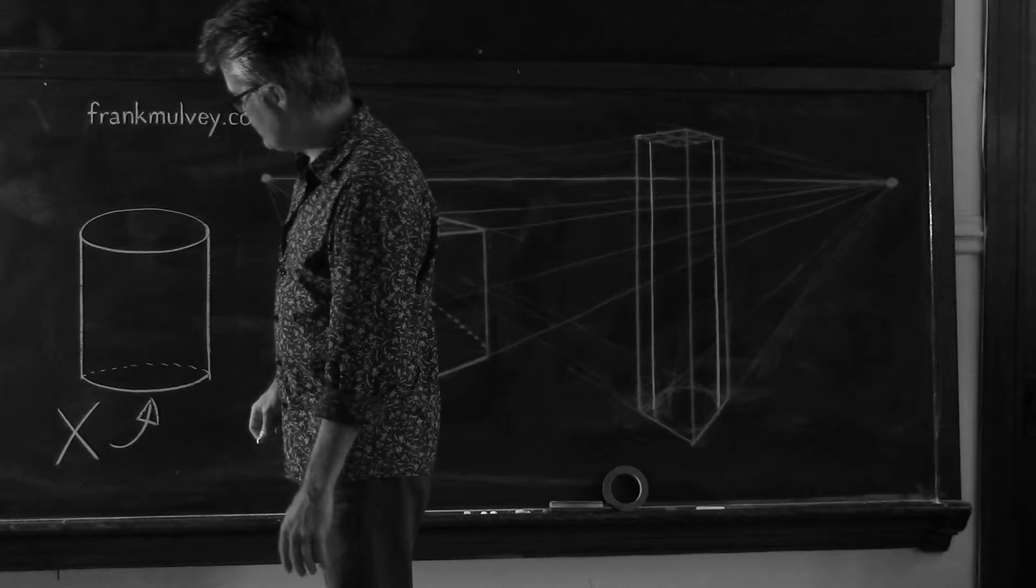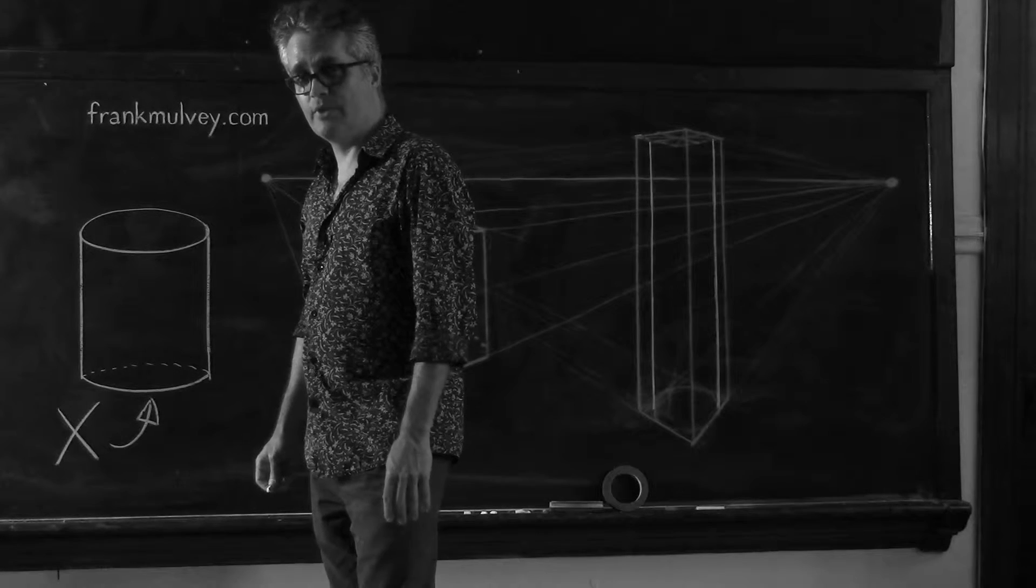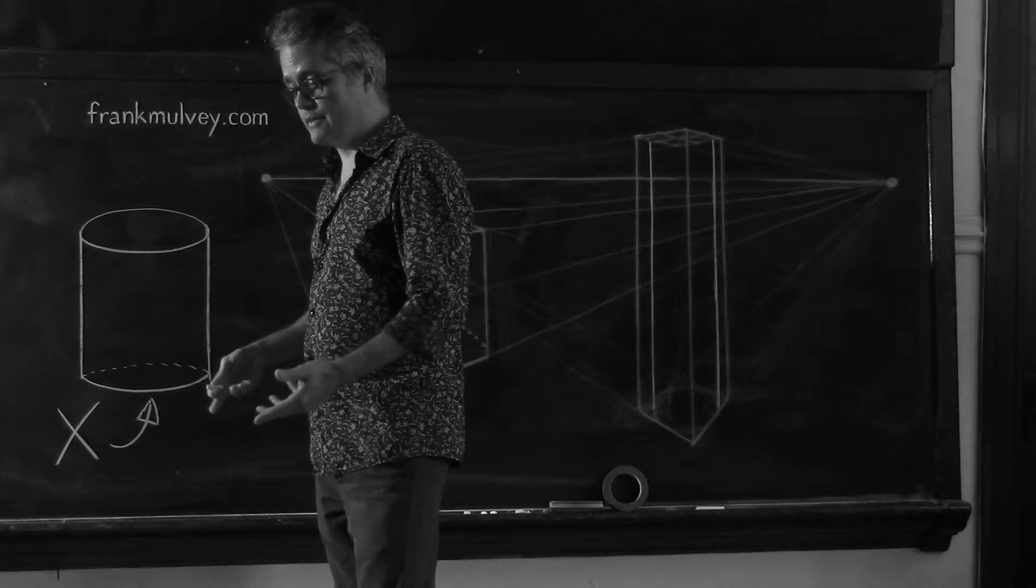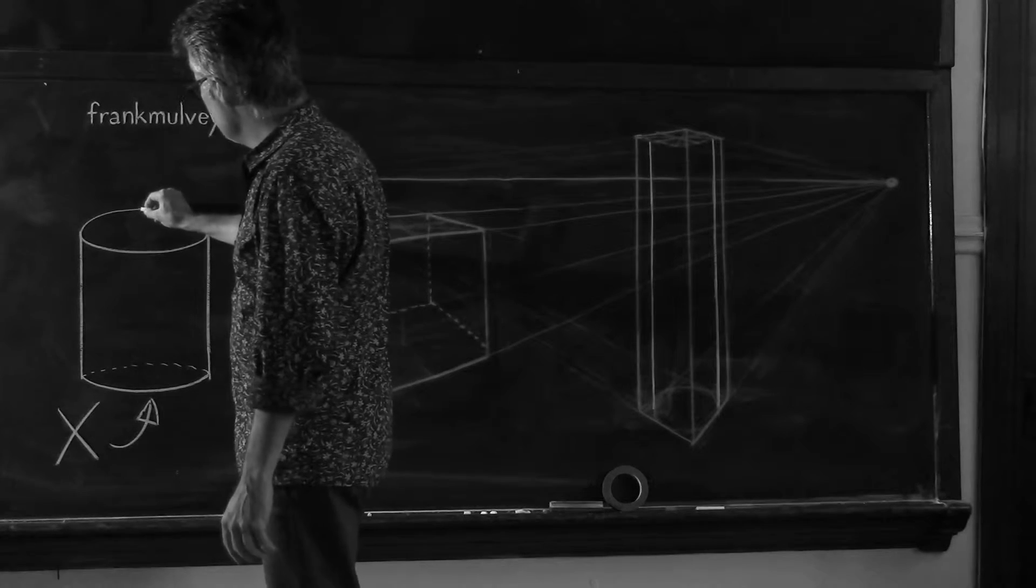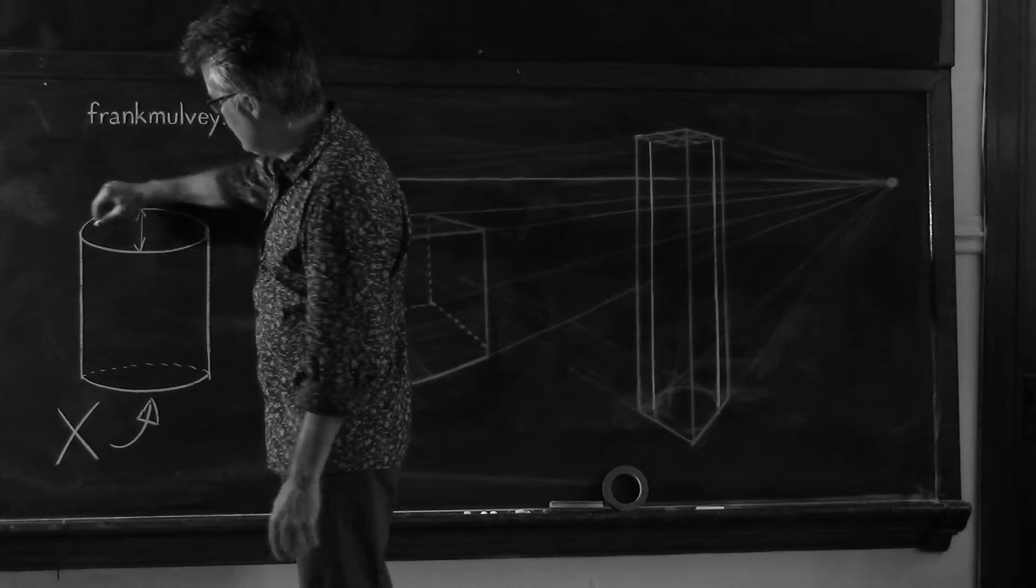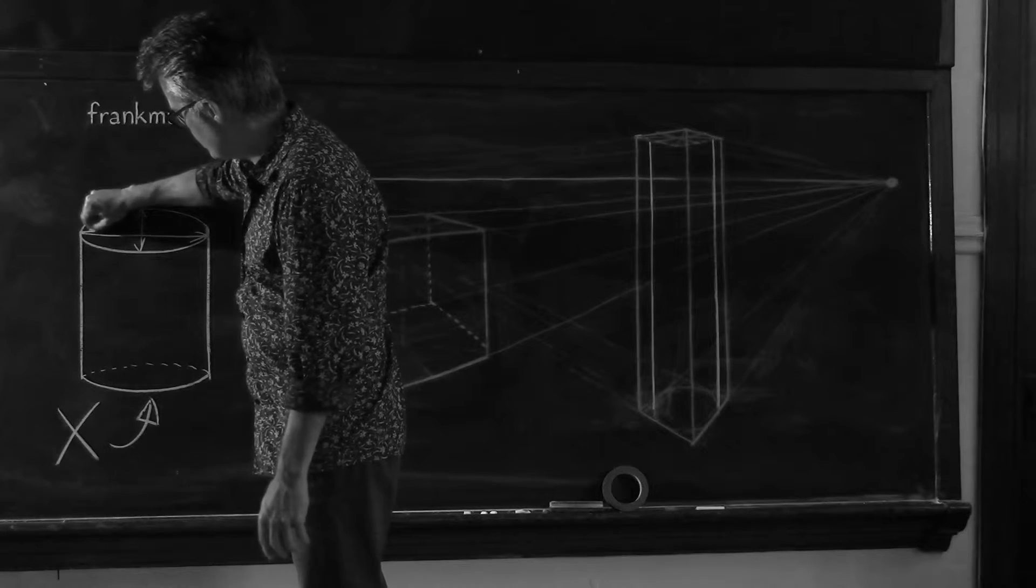The other problem has to do with the relationship between the height of the ellipse and the width of the ellipse. There's technical terms that apply to this. This dimension of the ellipse is called the minor axis. And this dimension of that ellipse is called the major axis.